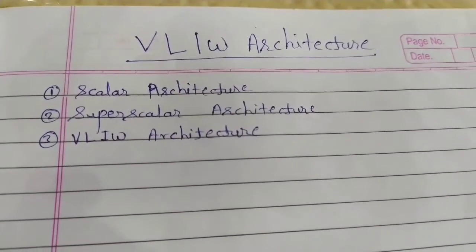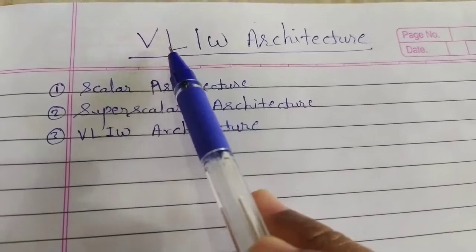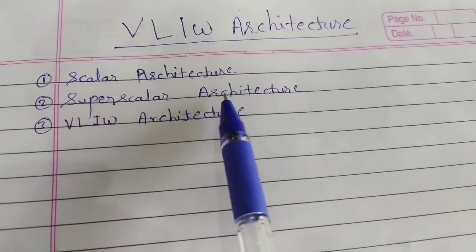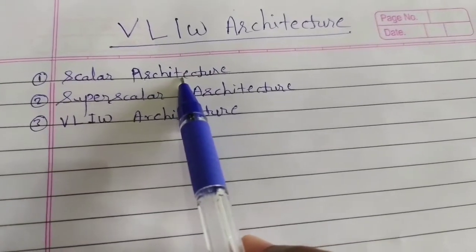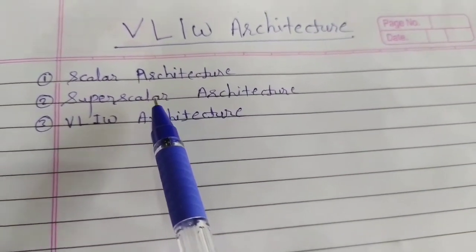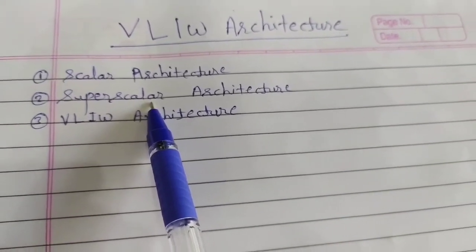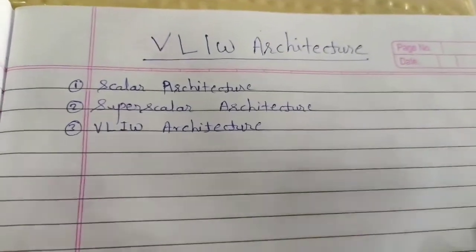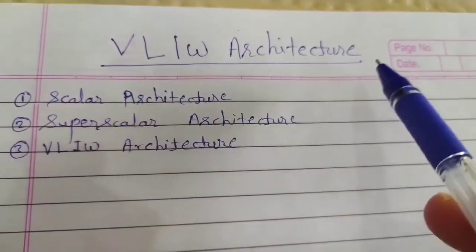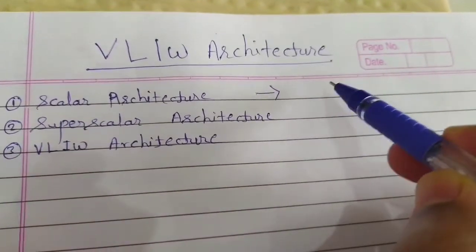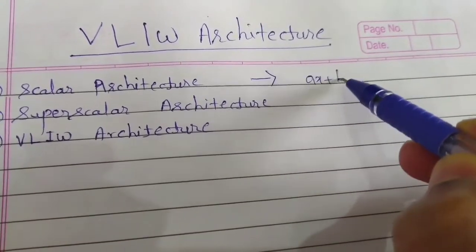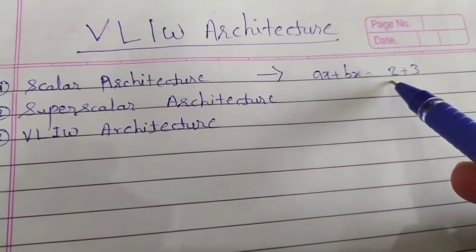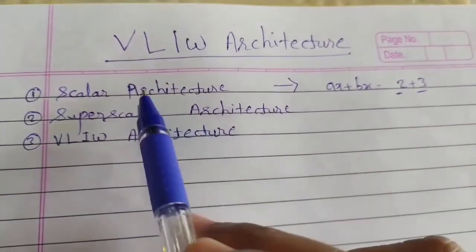Hello friends, welcome to my channel. Myself Parag Jambulkar. In this video we will discuss about VLIW architecture. Before that, in the last video we have seen scalar architecture and superscalar architecture. The processor which follows scalar architecture is called a scalar processor, and the processor which follows superscalar architecture is called a superscalar processor. A scalar processor performs operations on scalar quantities, for example ax plus bx, or addition of two plus three.